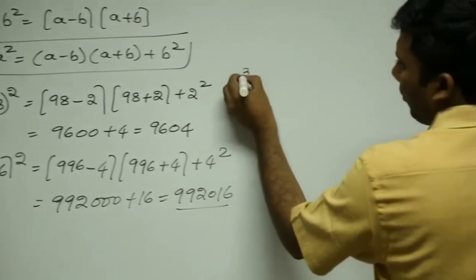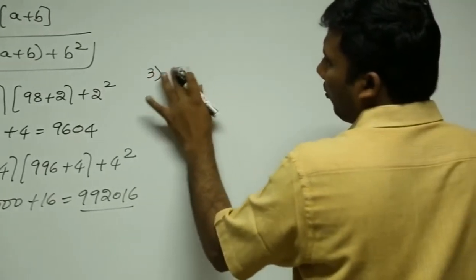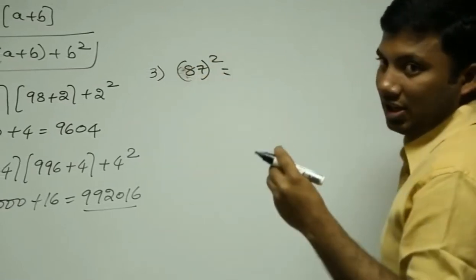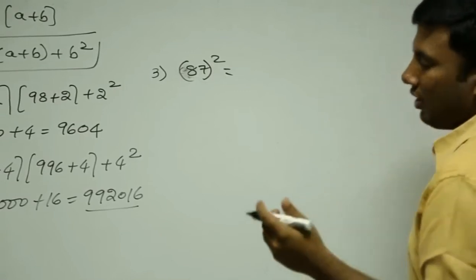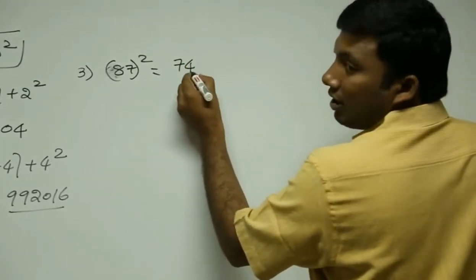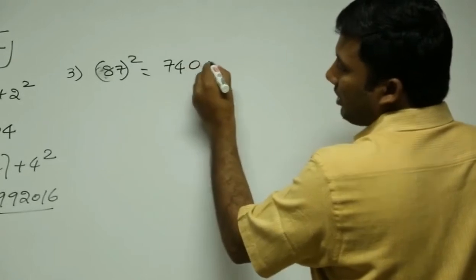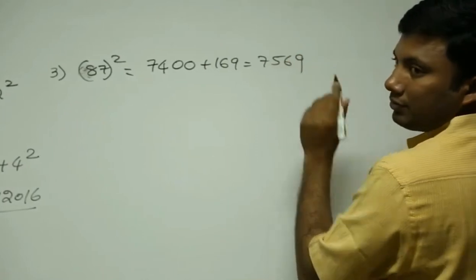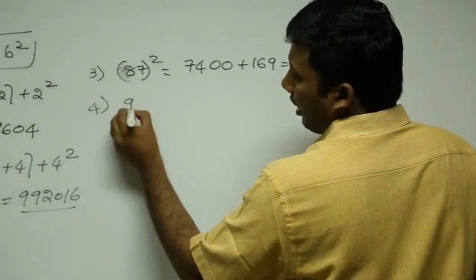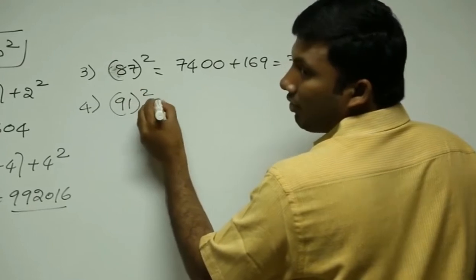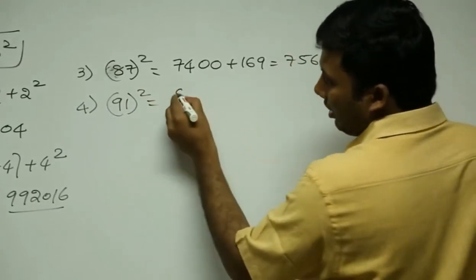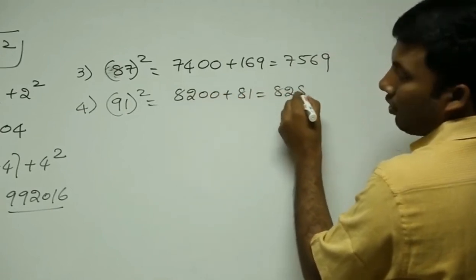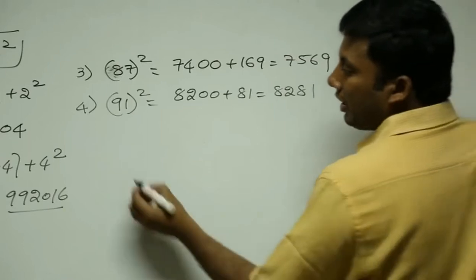Try to solve the next question orally — you can do it! You are bigger than what you think you are. 87²: 87 is nearest to base 100, so it's (87 - 13)(87 + 13) + 13² = 74 × 100 + 169 = 7569. Now 91²: (91 - 9)(91 + 9) + 9² = 82 × 100 + 81 = 8281. Are you all with me?